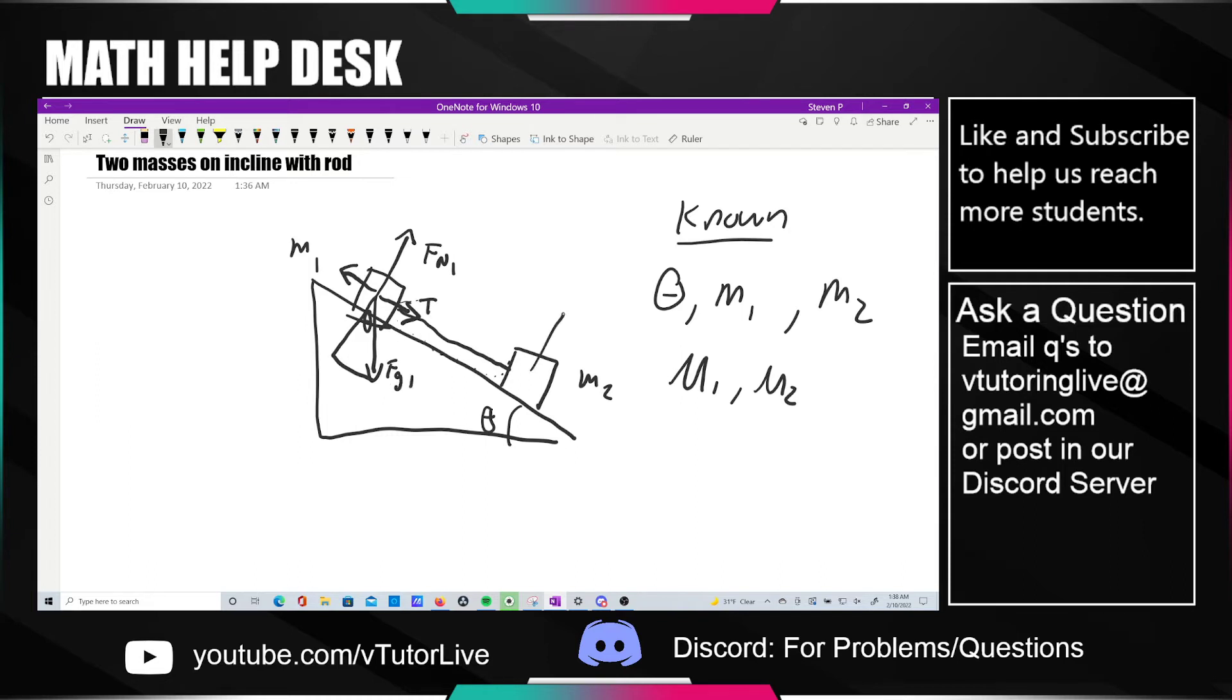But similarly, for over here, we're going to have Fn2. Tension is going to be pointing upwards this time. I think that's the really big difference here. And then there's force of gravity too, and we can break that up into parallel and perpendicular components again too. And force of friction is going to be, again, it's going to be pointing upwards. So force of friction 2. I forgot to fill it in the first time. Force of friction 1.